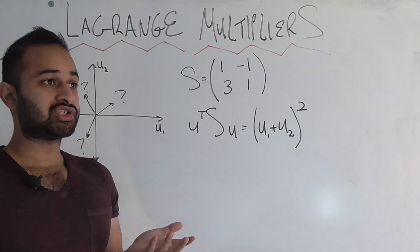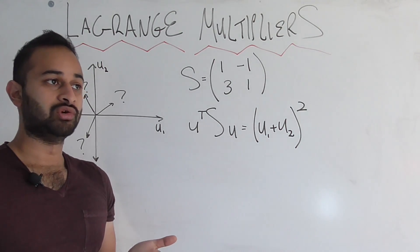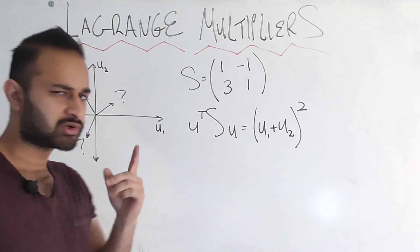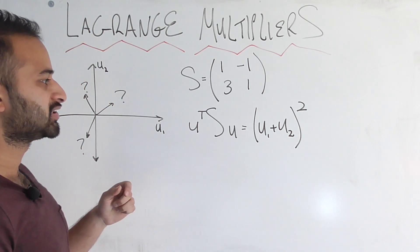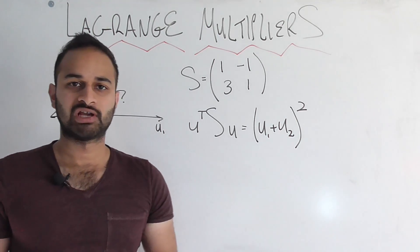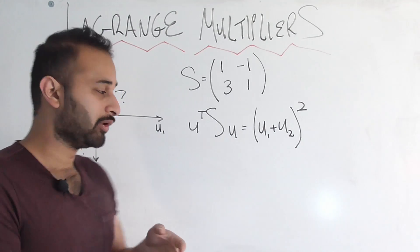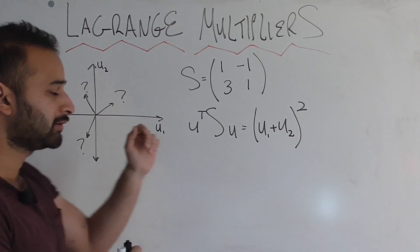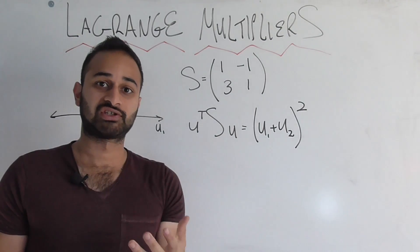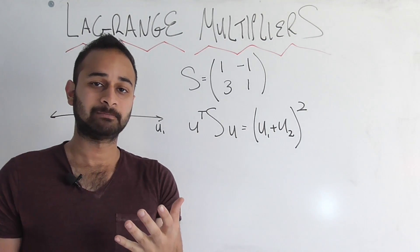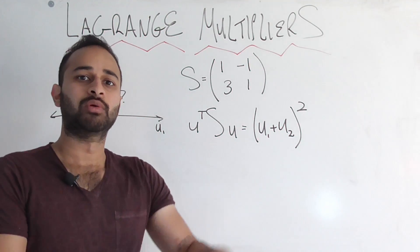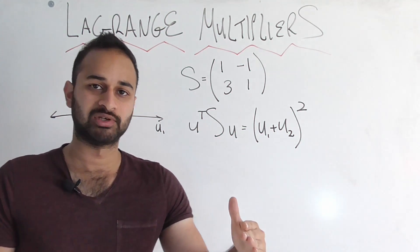The question is, which direction should we go in to increase our success of finding a new species? Let's say our chief biologist, super smart guy, has devised this formula for us, which tells us, based on which direction we go in, based on the U1 and U2 components of the direction we are choosing to go in, it tells us our success of finding a new species. And we want to, of course, maximize the success, because we want to go in the direction that's giving us the most success of finding a new species.